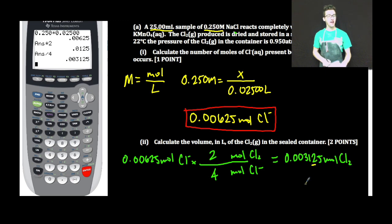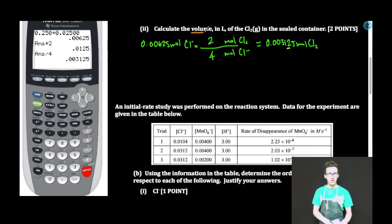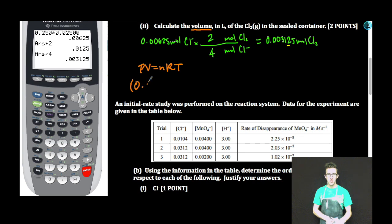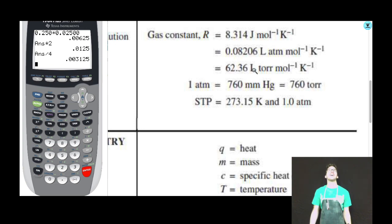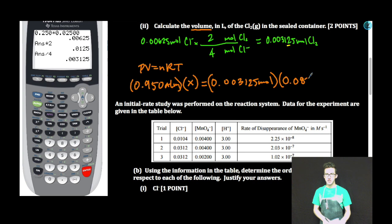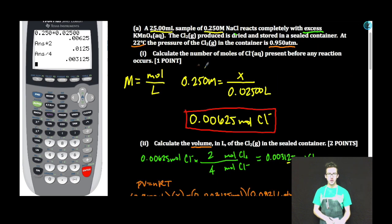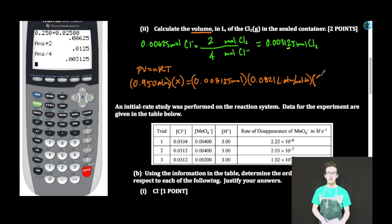Remind myself of sig figs. Not done — looking for volume in liters of that chlorine gas. Using the ideal gas law: pressure is 0.950 atmospheres, volume is unknown, number of moles is what we just figured out. Always go to your units to help decide which R value to use — 0.0821 liters times atmospheres per mole Kelvin. Temperature is 22 degrees Celsius, which converts to 295 Kelvin. Don't forget to convert.